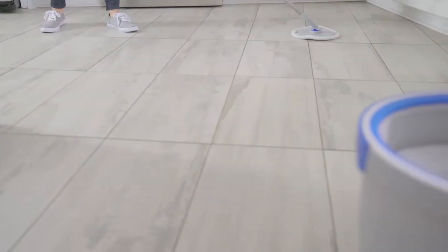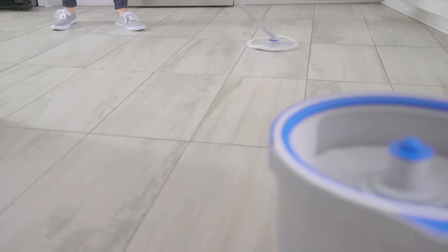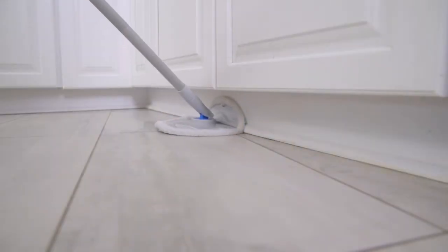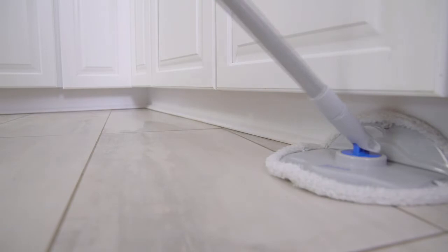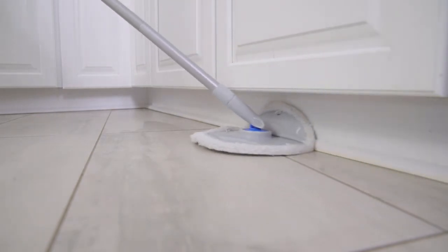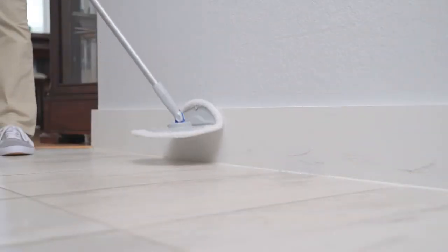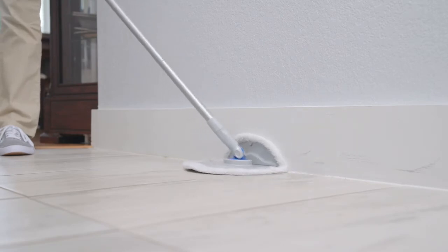The microfiber scrubbing pad has built-in scrubbers as well as fringe around the edges for extra absorption. The mop head helps clean under counters, cabinets, and furniture and is designed to flip up, making cleaning baseboards easy without bending over.